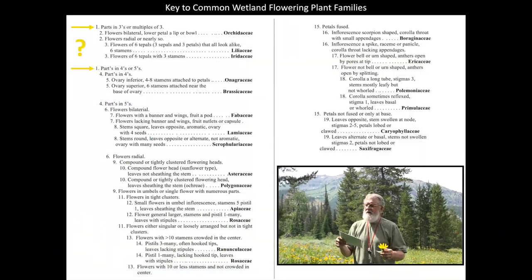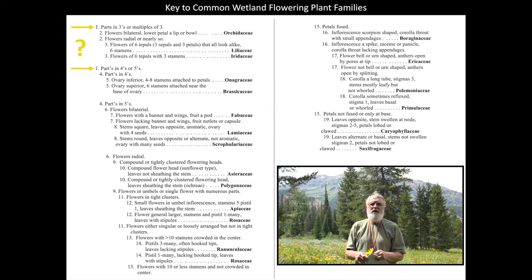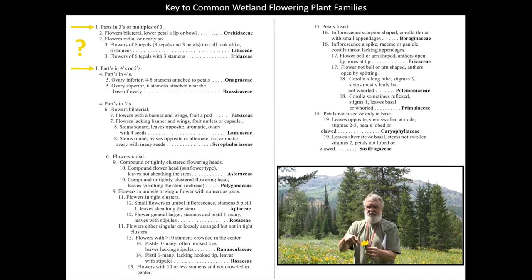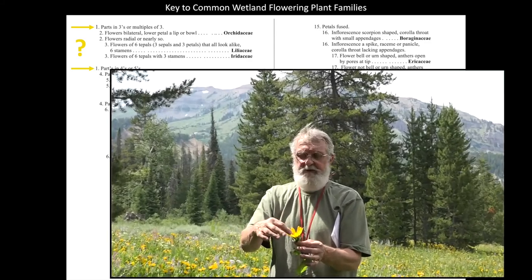In our key, the first lead asks: are the parts in three versus fours and fives? Well, in a composite, this is exactly that — this is a composite of a whole series of flowers, a flowering head. The actual flowers are this individual, this individual, or all these in the center. So I'm going to take one from the center, a single flower.